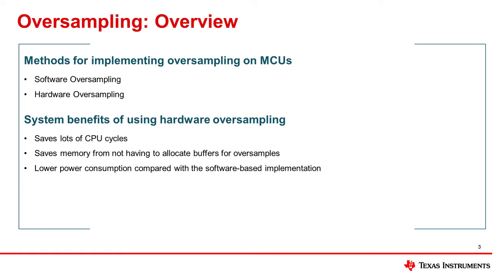To improve ADC performance with respect to resolution and noise, oversampling can be implemented either in hardware or by developing a dedicated software routine. The software oversampling technique requires an ADC with a high sampling rate in order to increase the effective resolution without sacrificing input signal bandwidth. A memory buffer for storing samples is also needed. When used in conjunction with a DMA, the buffer can help to reduce CPU processing overhead. ADCs embedded in microcontrollers can be well suited for this technique if they have a high sampling rate and their integral nonlinearity and differential nonlinearity specifications are in line with the desired effective resolution.